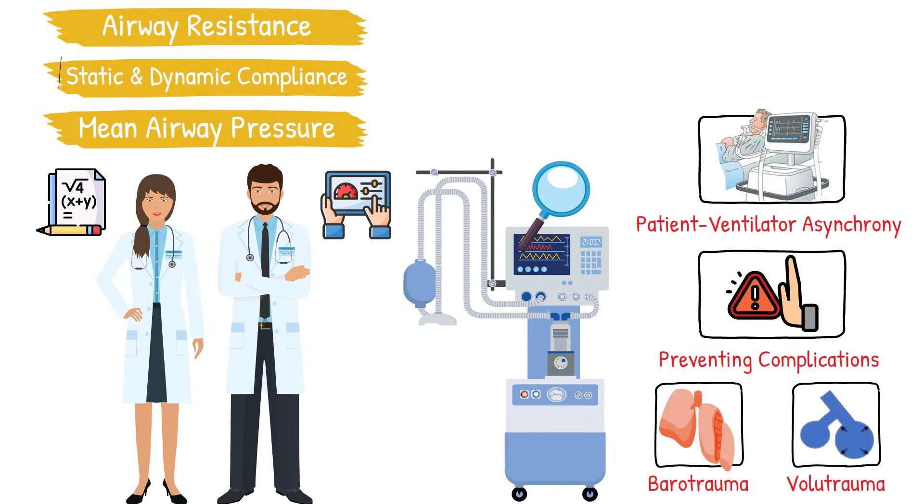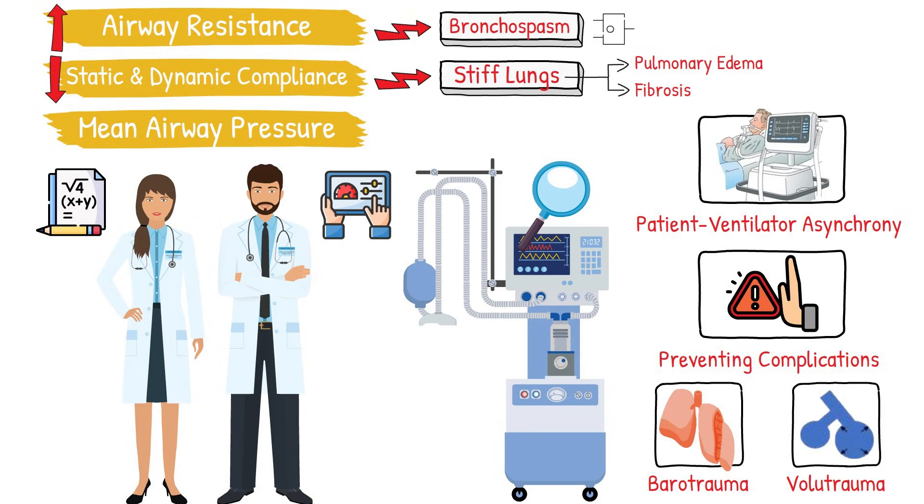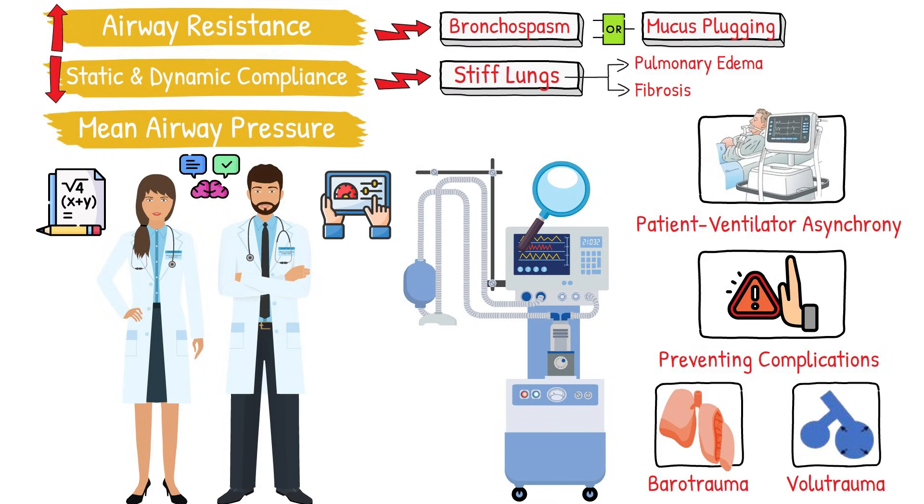If a patient's compliance is decreasing, that could signal stiff lungs due to pulmonary edema or fibrosis. If airway resistance increases, it might suggest bronchospasm or mucus plugging. Understanding the formulas behind these values helps you respond appropriately and swiftly.